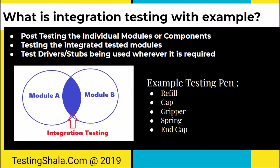Let me give a picture here. As you can see, we have a separate module A and a separate module B. When module A and B are getting integrated, we are going to validate the integration points — just to ensure that module A and module B work as expected at those integration points, meaning the connecting points between module A and module B.